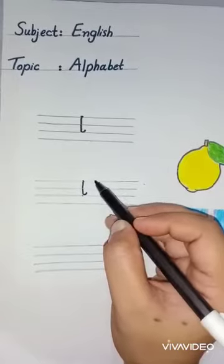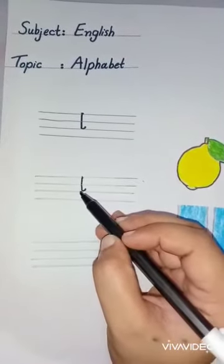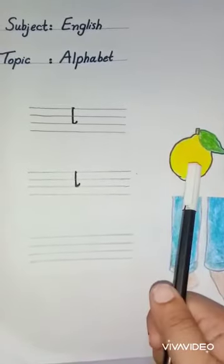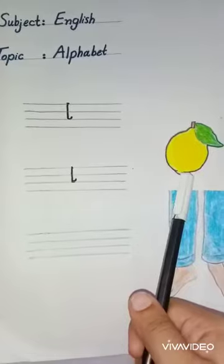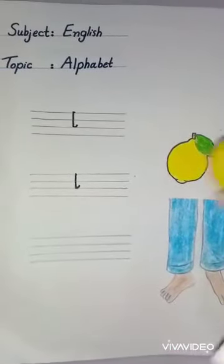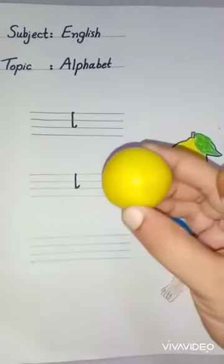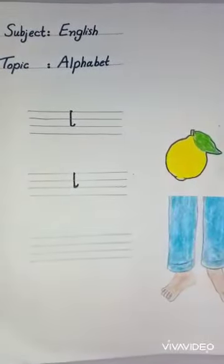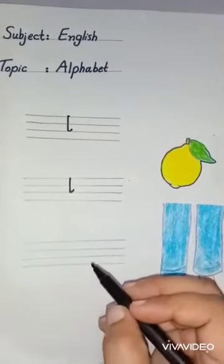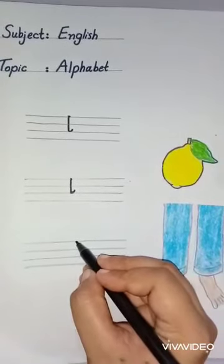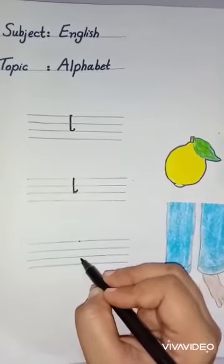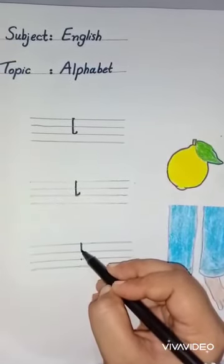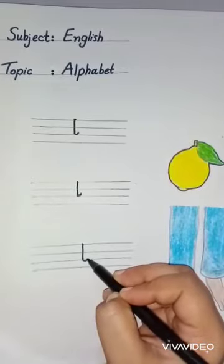This is alphabet L. Make a dot on the third line, then make a straight line, and then make a curve. This is alphabet L.